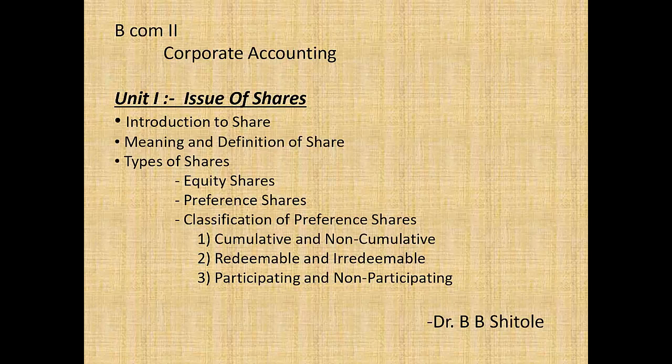The second type is preference capital. Preference shareholders have a priority over equity shareholders in respect of payment of dividend, and the dividend rate is always fixed. These shares have priority over equity shares in payment of dividend — they earn the dividend before the equity shareholders. The second priority is in repayment of capital in case of liquidation or winding up of the company.